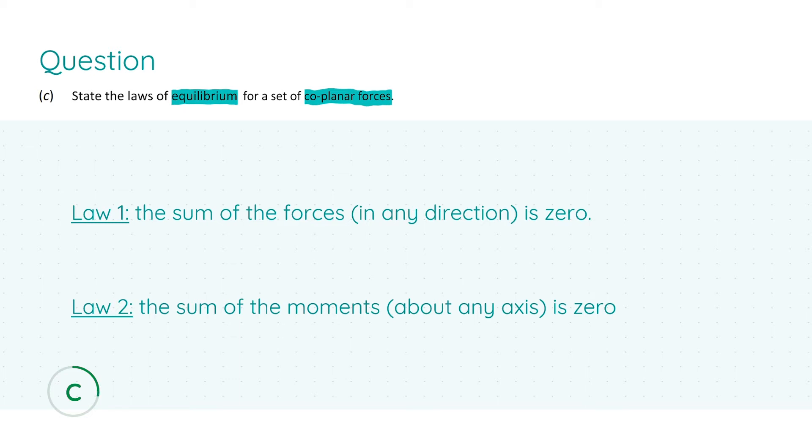Law one states that the sum of the forces in any direction is zero, so we're looking at translational forces here. Forces up equal forces down, left forces equal right forces and so forth. Your first correctly stated law will give you your first four marks.